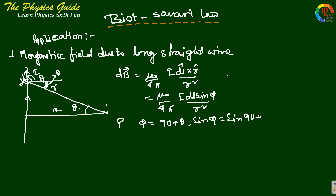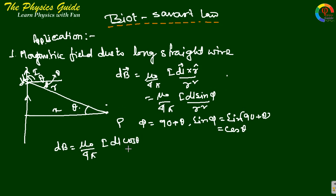Therefore sinφ equals sin(90 + θ) which is cosθ. So our equation converts to dB equals mu₀ by 4π times I dL cosθ by R squared. Since dL is varying, let the distance between the element dL and the origin be l, so l by x equals tanθ.